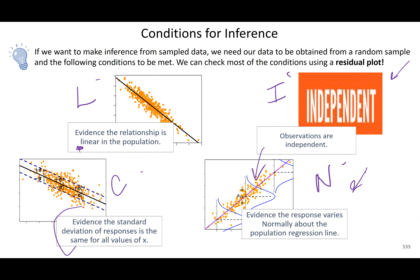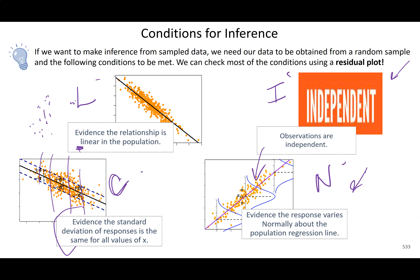C is for constant variance or constant standard deviation: the spread is constant throughout. You don't want a data set that's highly spread in some places and very compact in others, because the line would be poor at predicting in some regions and great in others. We have plots to check all of these; for independence, you'll primarily look at the description of the problem.